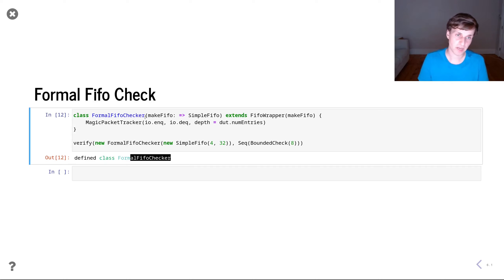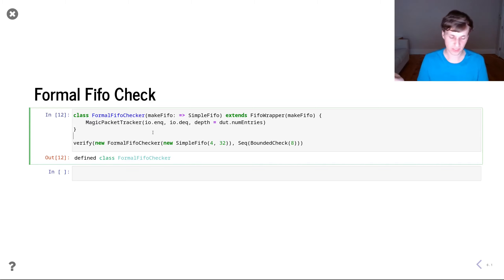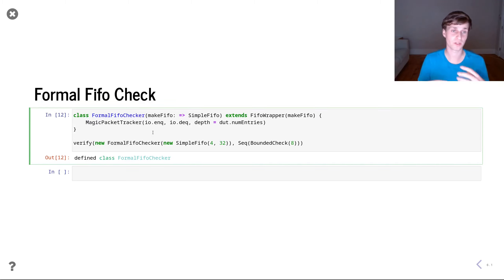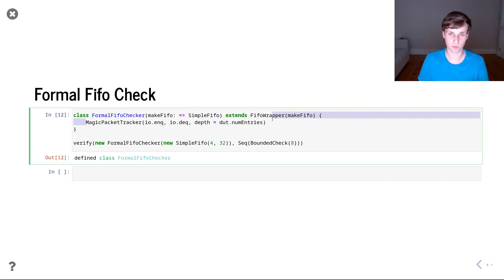The magic packet tracker has a whole bunch of examples in the chiseltest repository, where we test it with many different FIFOs that can all be verified with just one line of code — instantiating this tracker. That's pretty cool.